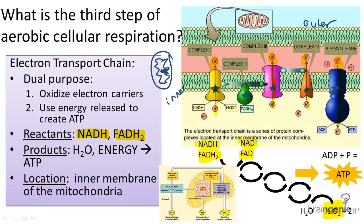So in summary, try to remember the function of the electron transport chain: to oxidize electron carriers and to use energy released to create ATP.